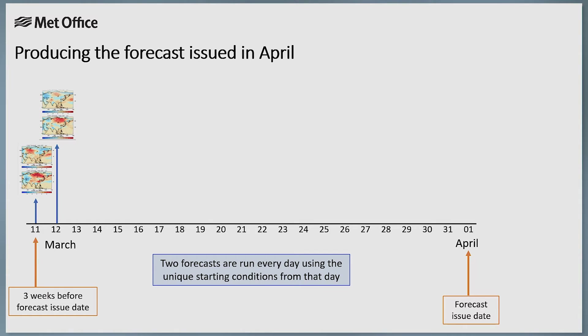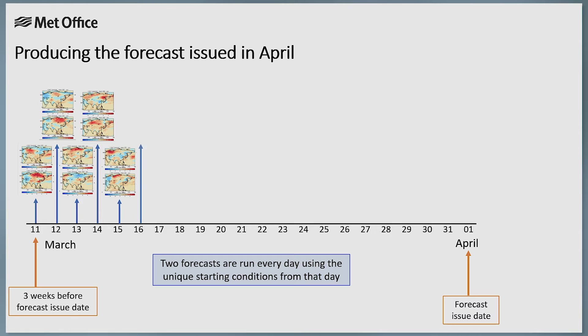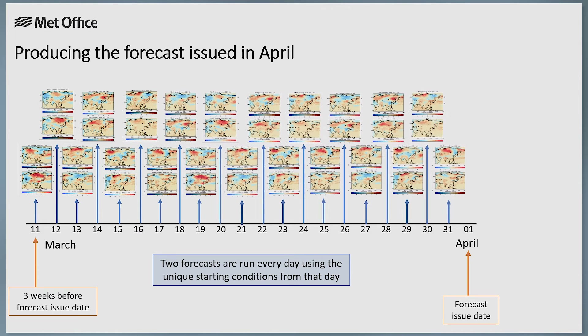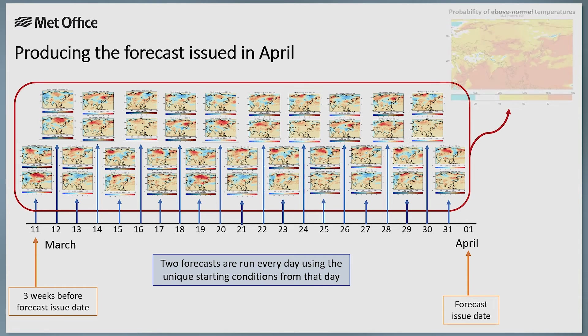The different global producing centres all use different methods to come up with their ensembles, but they're all trying to measure the uncertainty in the forecasts in different ways. Here at the Met Office, our global seasonal forecast system uses a lagged approach. Two forecasts are run each day using the starting conditions for that day, but with slight variations in their physical processes. The changes in the atmosphere and ocean from day to day give another source of uncertainty in the starting conditions. For the seasonal forecast for the 1st of April, for example, we would pool together the past three weeks of forecasts, which gives us an ensemble of 42 members in total.